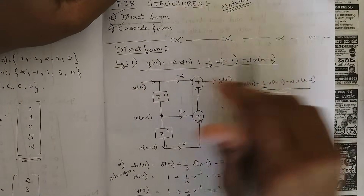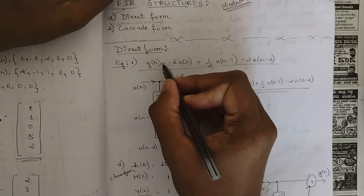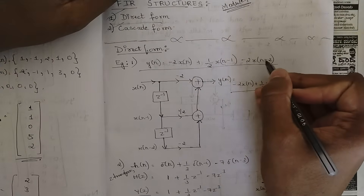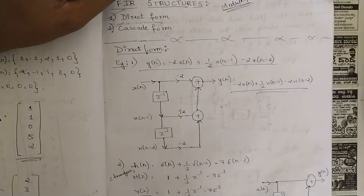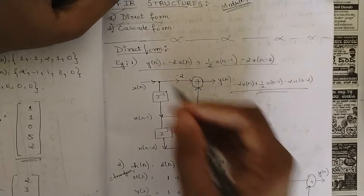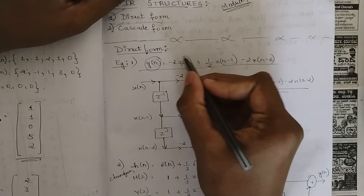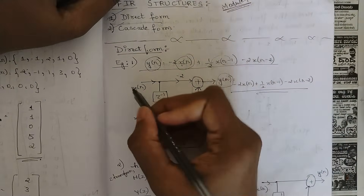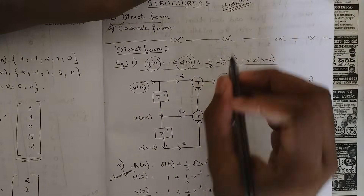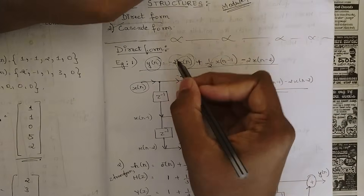Example one: the equation given is Y(N) = -2·X(N) + (1/2)·X(N-1) - 2·X(N-2). For this we should write the direct form structure. Keep in mind that Y(N) is written on the output side, and X(N) is written on the input side, since X(N) is the common factor in all three terms. We have three terms getting added together with plus and minus signs, and we should separately write the coefficients and the X(N) terms.